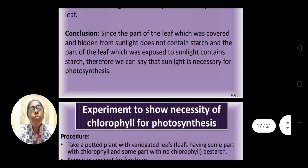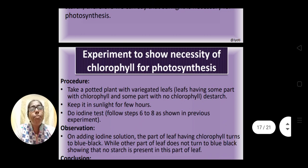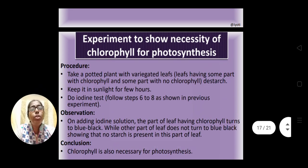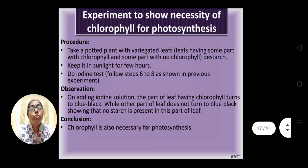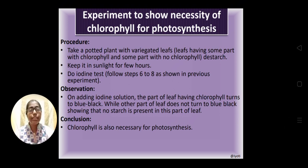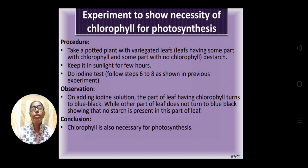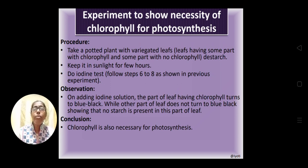The next experiment shows the necessity of chlorophyll for photosynthesis. You have studied that carbon dioxide, sunlight, and chlorophyll are all required. Here we are proving one by one — sunlight has already been proved. Now we prove whether chlorophyll is required. For this we take a potted plant with variegated leaves.